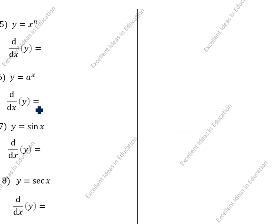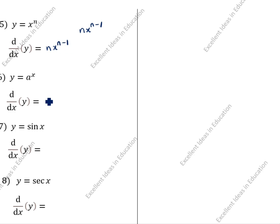Next: y = x^n. How will we differentiate this? The formula is: differentiation of x^n is n·x^(n-1). So the answer is n·x^(n-1). This is the formula. dy/dx is the differentiation notation.